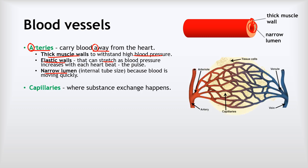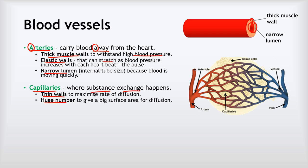Capillaries are where substance exchange happens — where oxygen, glucose, and nutrients leave the blood and go into our cells, and where carbon dioxide, urea, and other waste leave the cells and go into the blood. Their adaptations are all about maximising the rate of diffusion: they have thin walls to minimise the diffusion distance, and there are thousands of kilometres of these tiny blood vessels, giving them a large surface area.